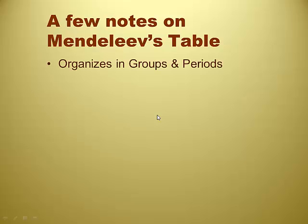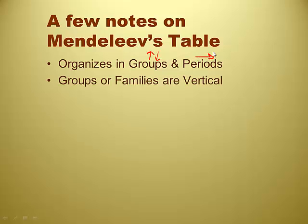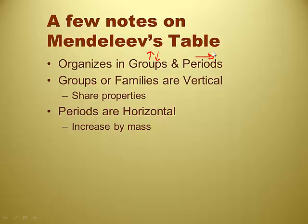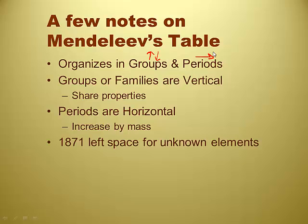Mendeleev's table organizes in groups and periods. Groups going which direction? Groups up and down — families. And periods going across. Groups and families are vertical, and they share properties. Periods are horizontal and increase by mass as you read to the right. In 1871, he left space for unknown elements — those are the ones we just circled. He called them 'Eka-something.' The one next to silicon he called Eka-silicon. Eka in Russian means 'close to.'